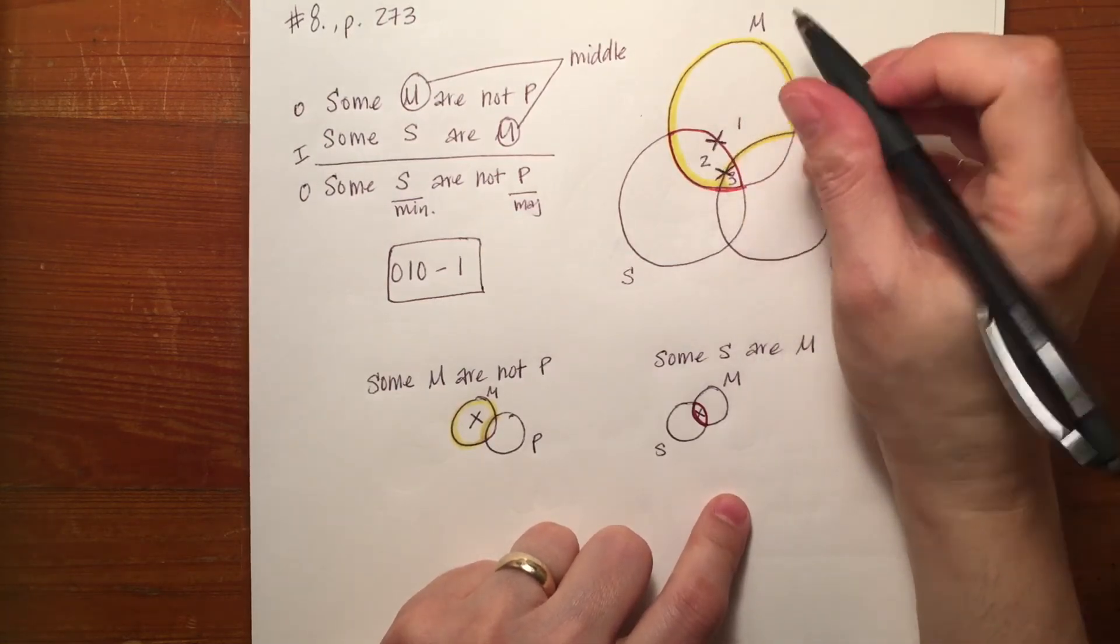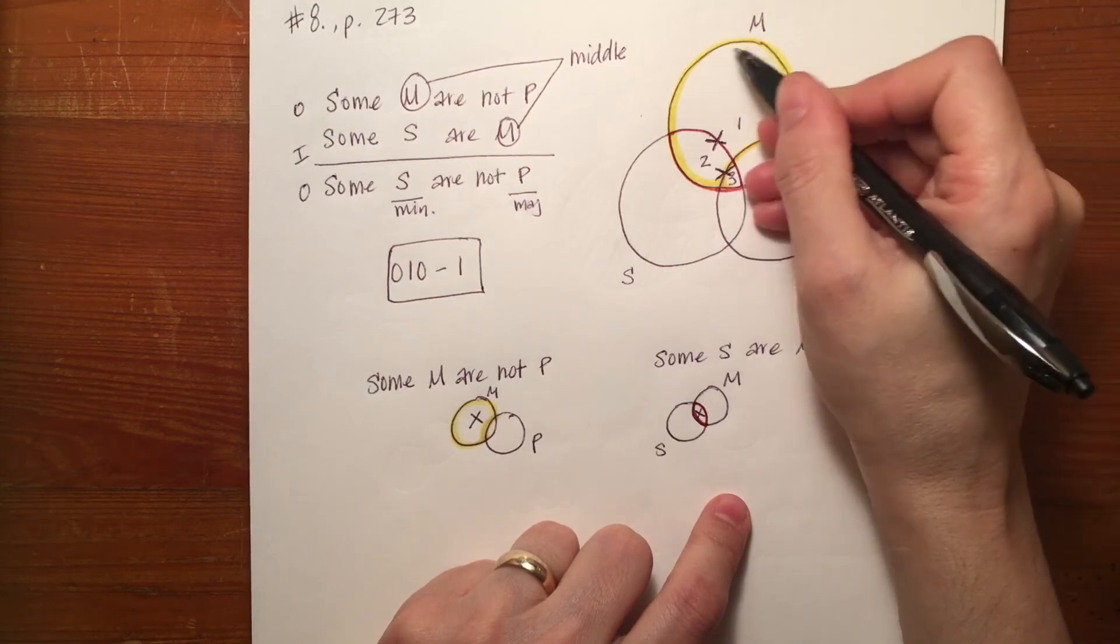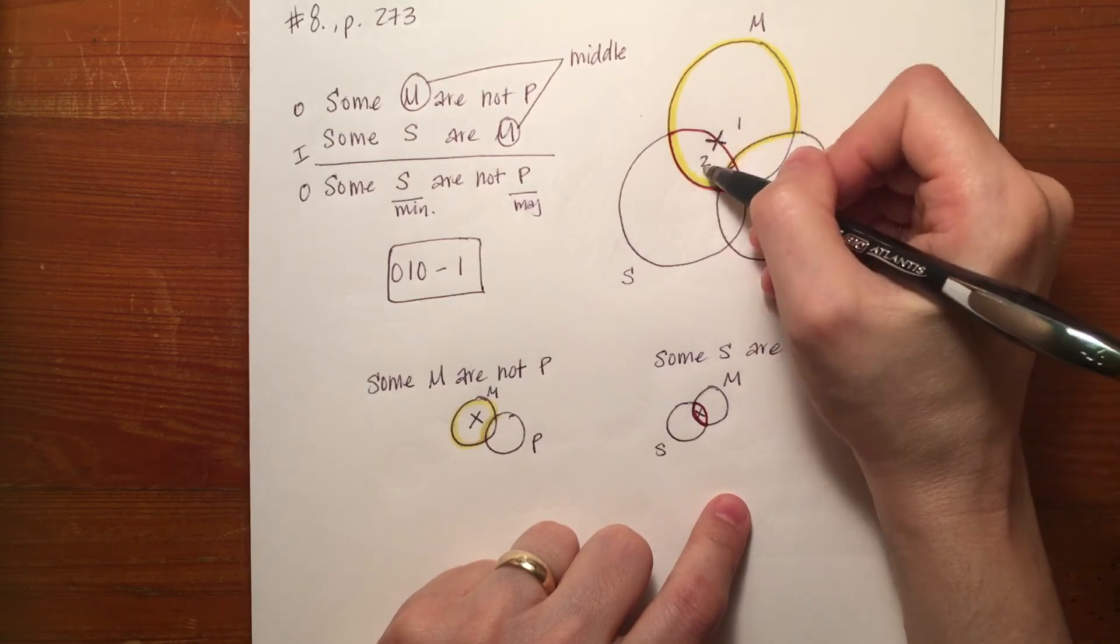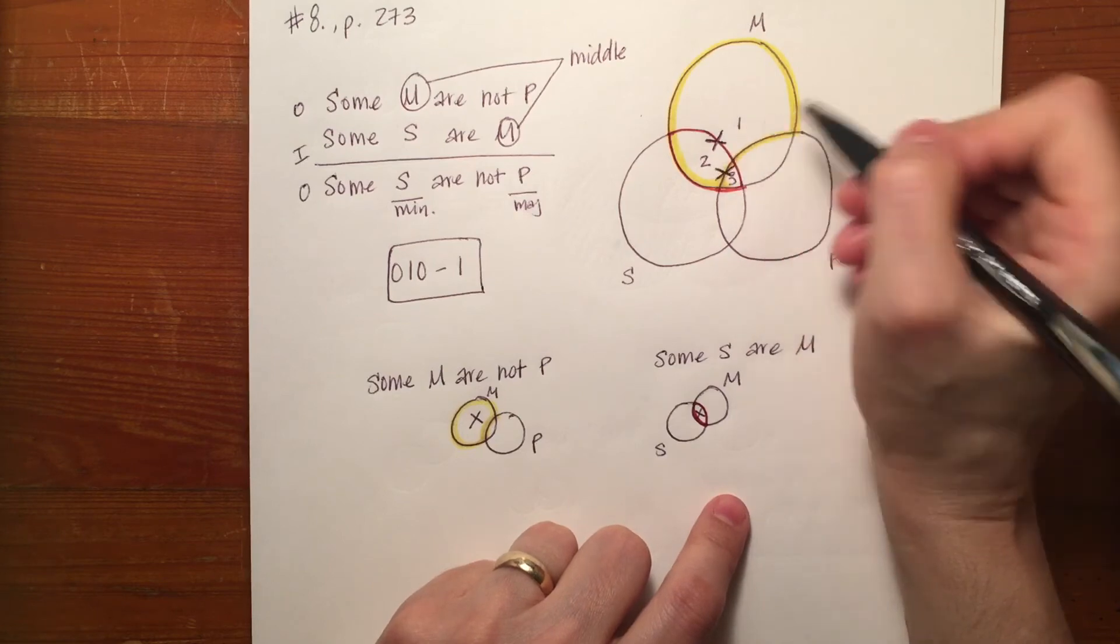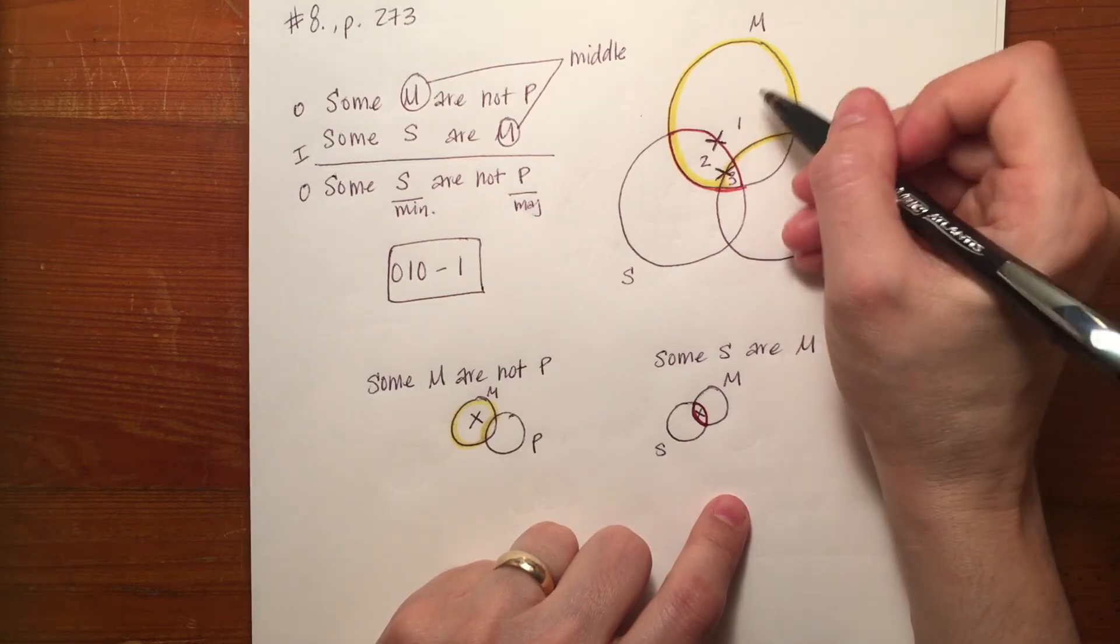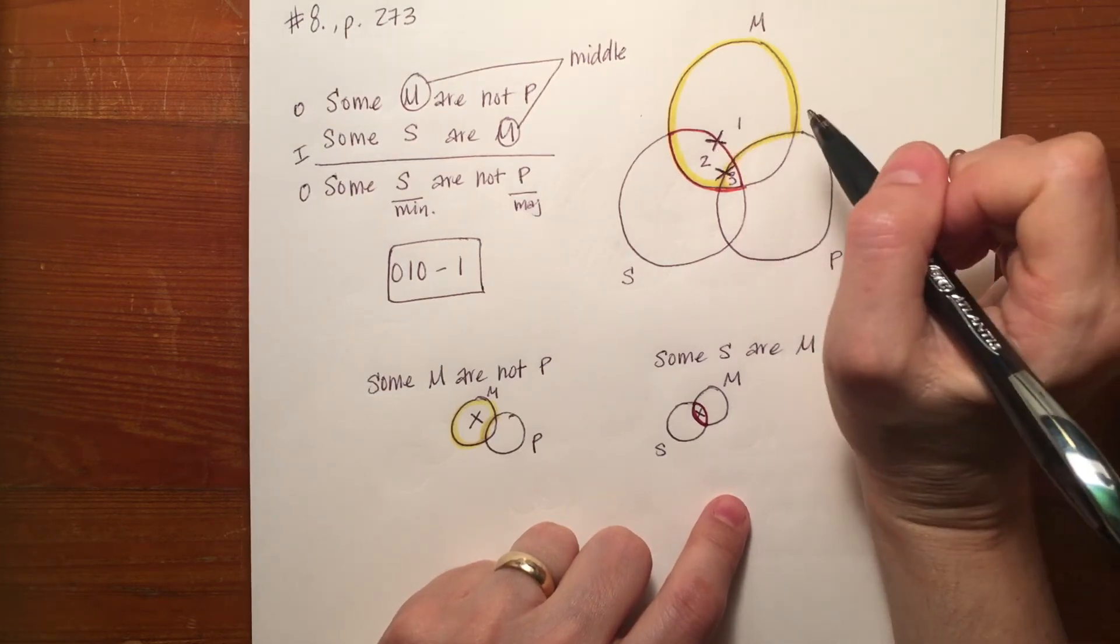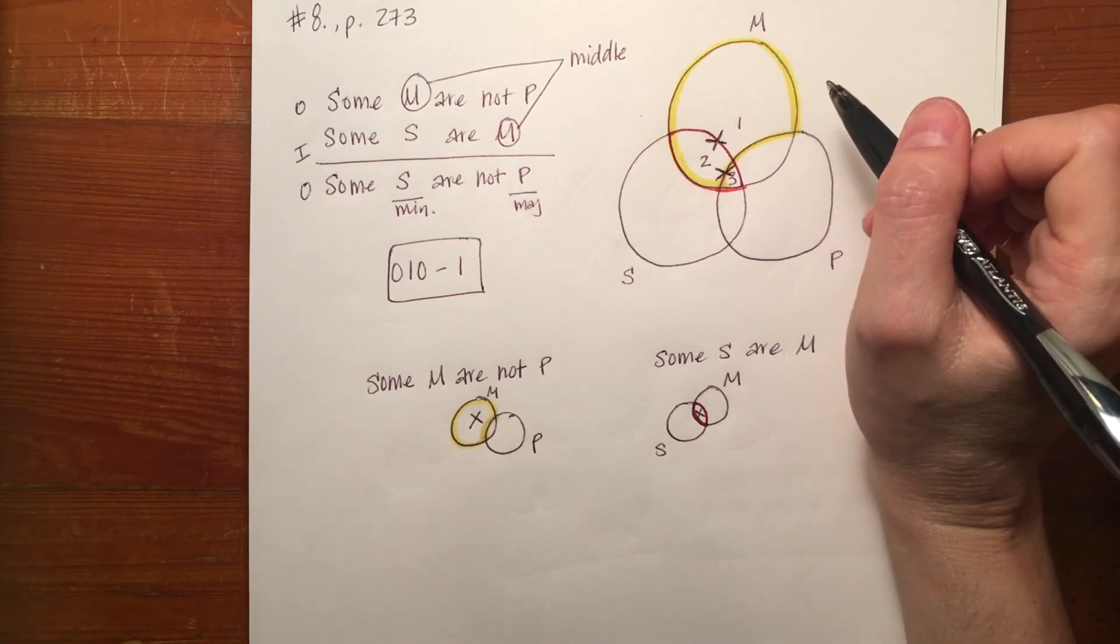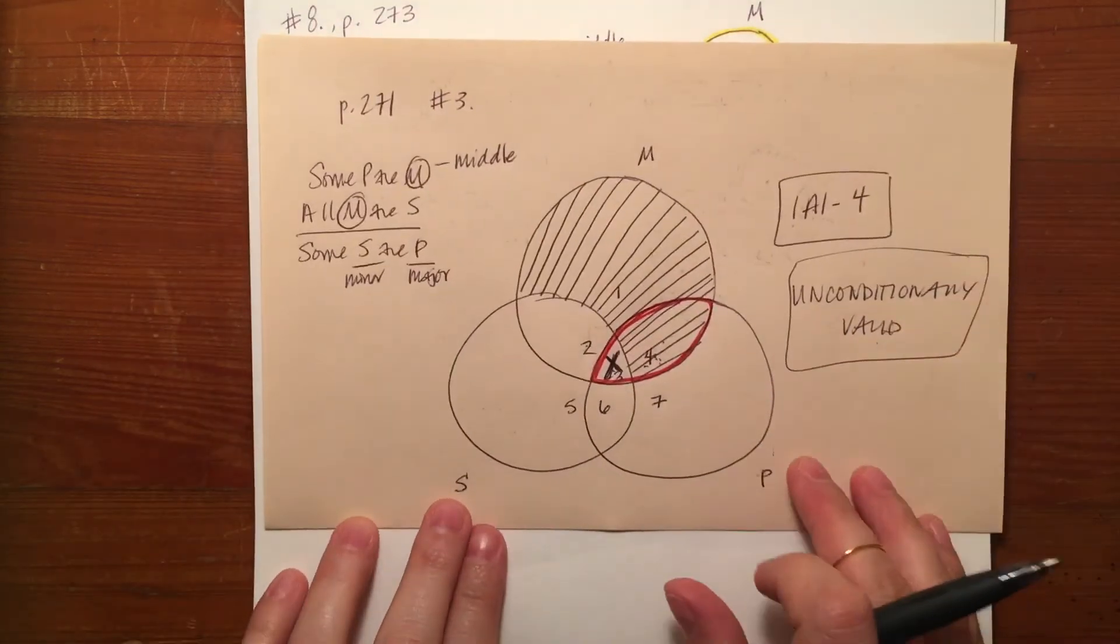If any of these areas, if we were working with the larger part of M and areas one and two, if either one of those areas had been shaded, then we would have put the X in the open spot. Just like we did in the original example that we looked at.